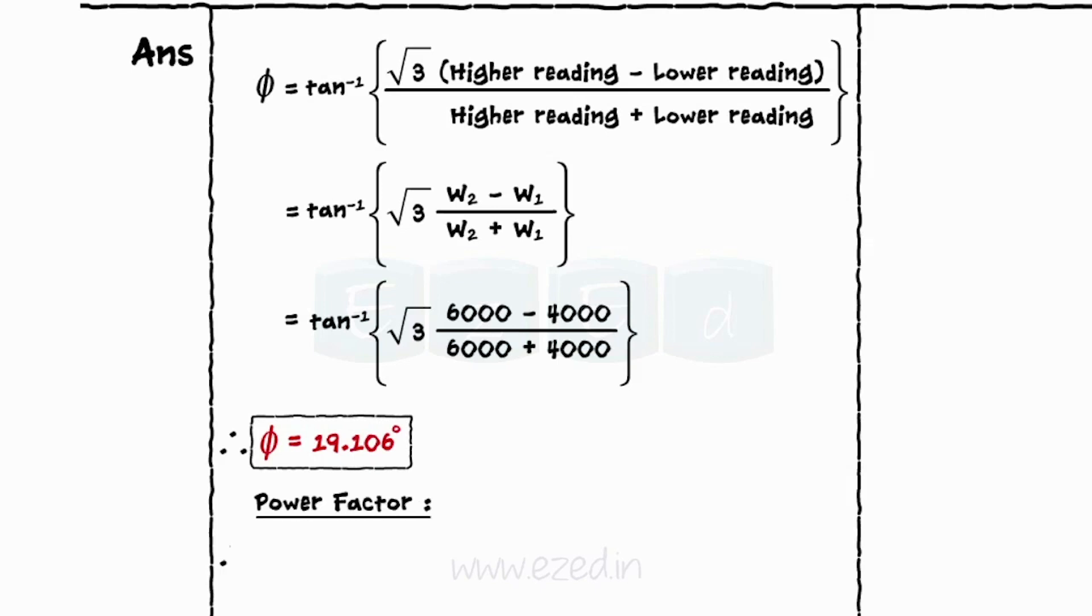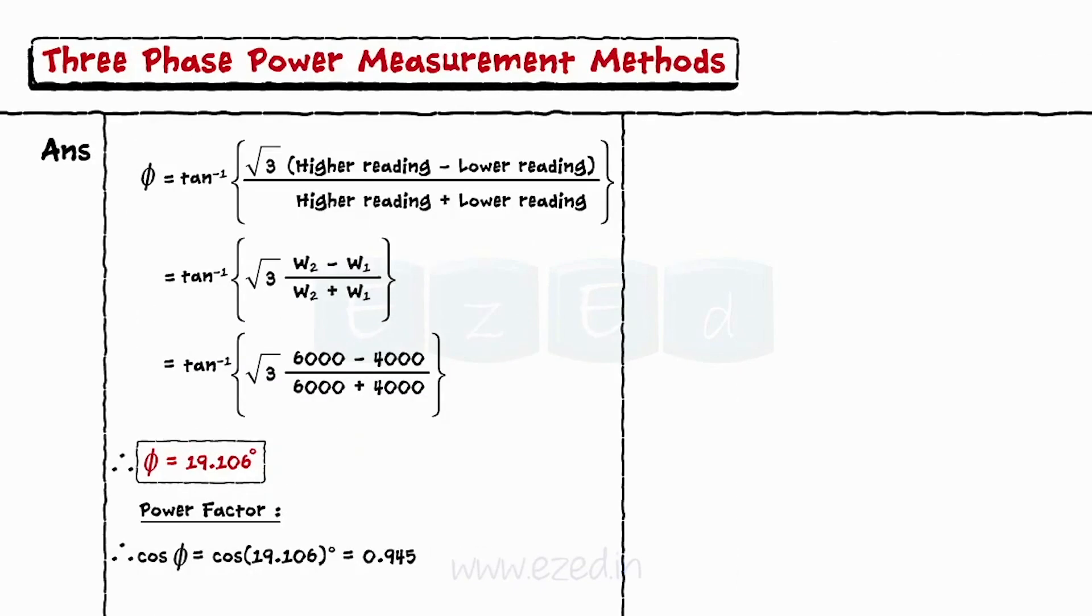Thus, the power factor is calculated as cos phi equals cos of 19.106 degrees equals 0.9672.